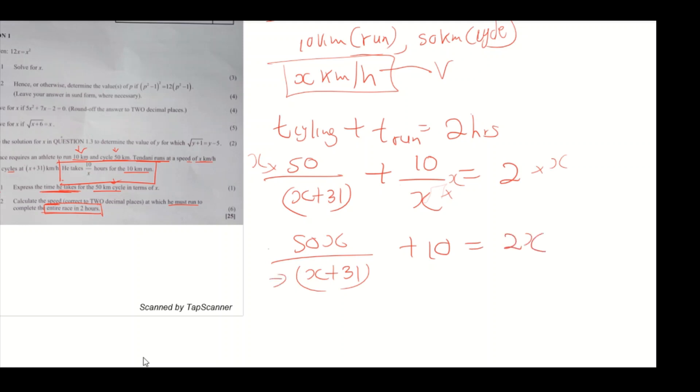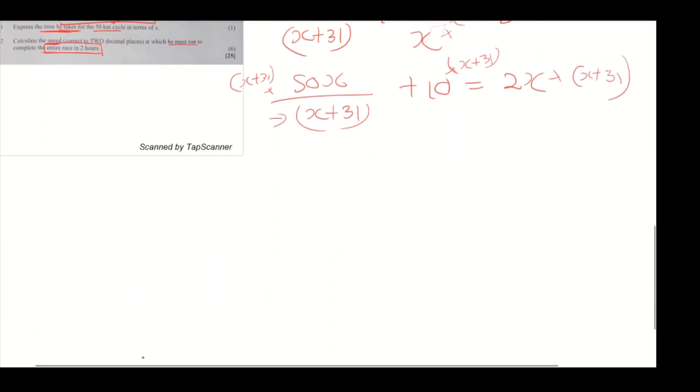Multiply all sides by x plus 31 to remove the denominator. We're going to have 50x plus 10 times x plus 31 equals 2x times x plus 31.